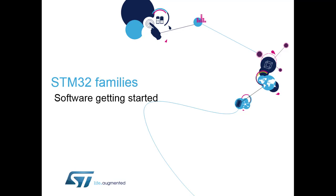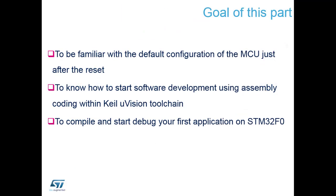We're now going to have a look at our first hands-on, showing you how to get started using the STM32 in assembler. The goal of this section is to get familiar with the default configuration of the STM32 after reset — what mode we're in and how we need to change it. We'll use the MDK-ARM Keil uVision tool to edit, compile, and debug code on the STM32 F072 Nucleo board.